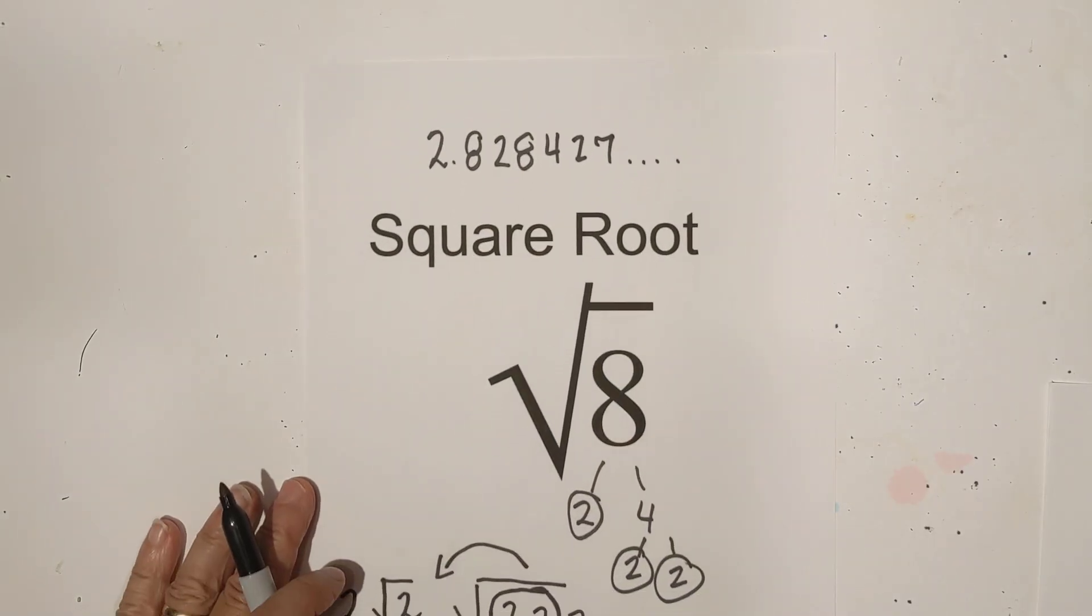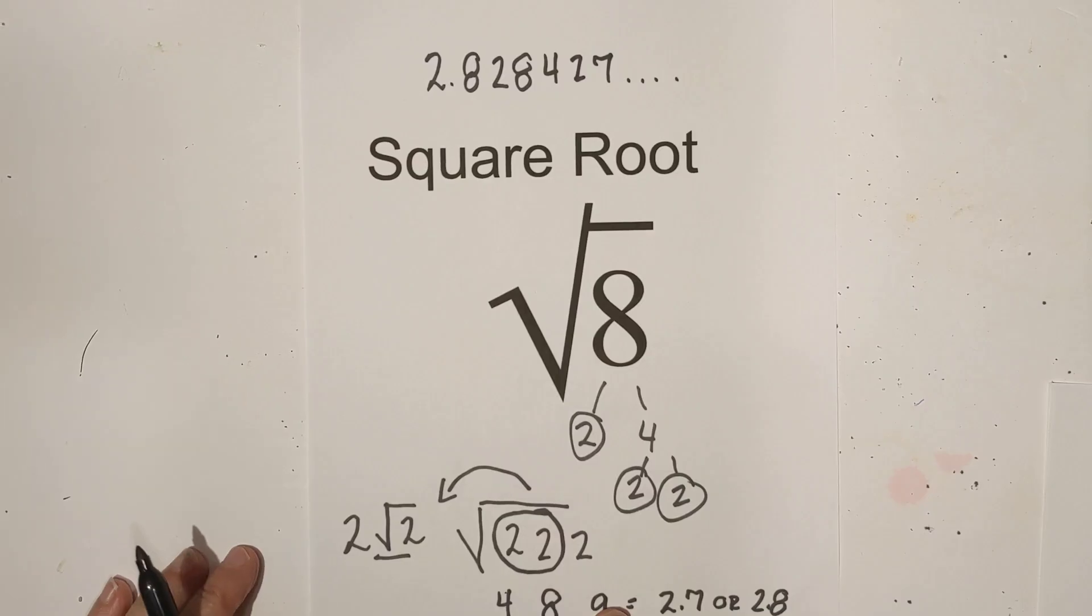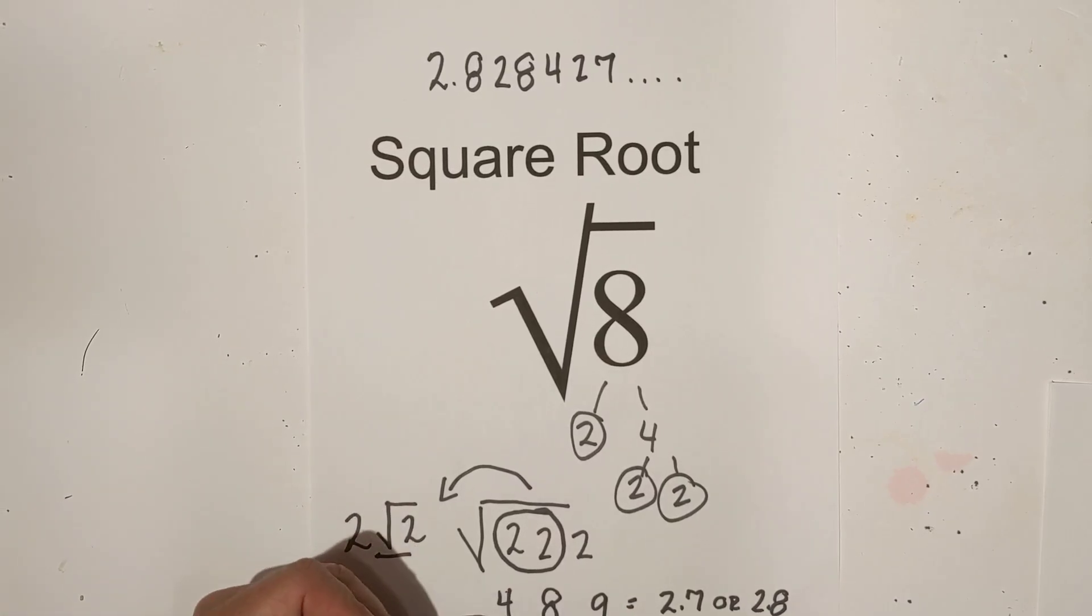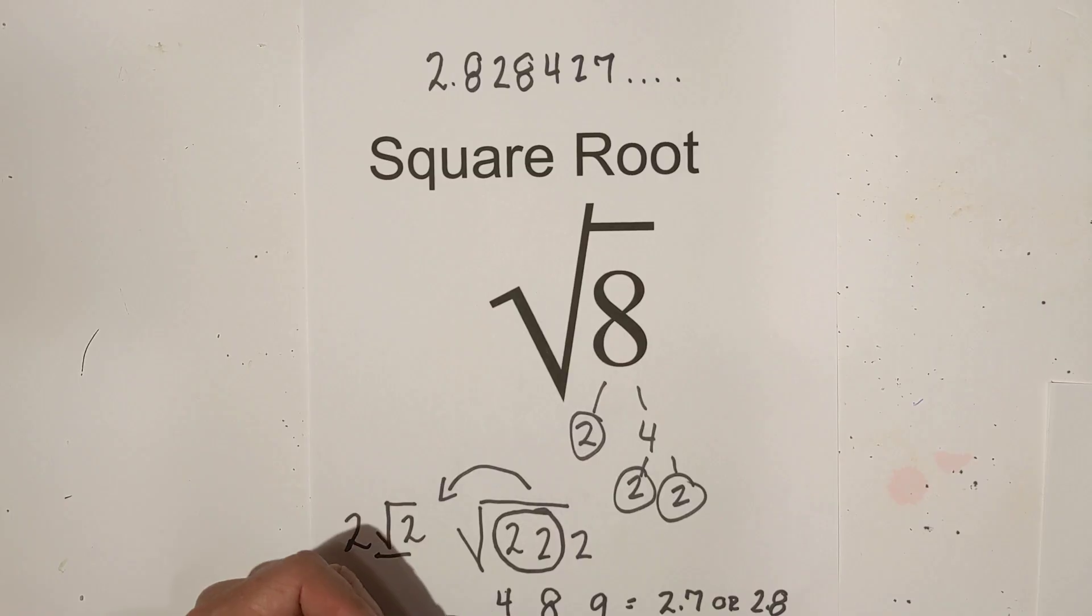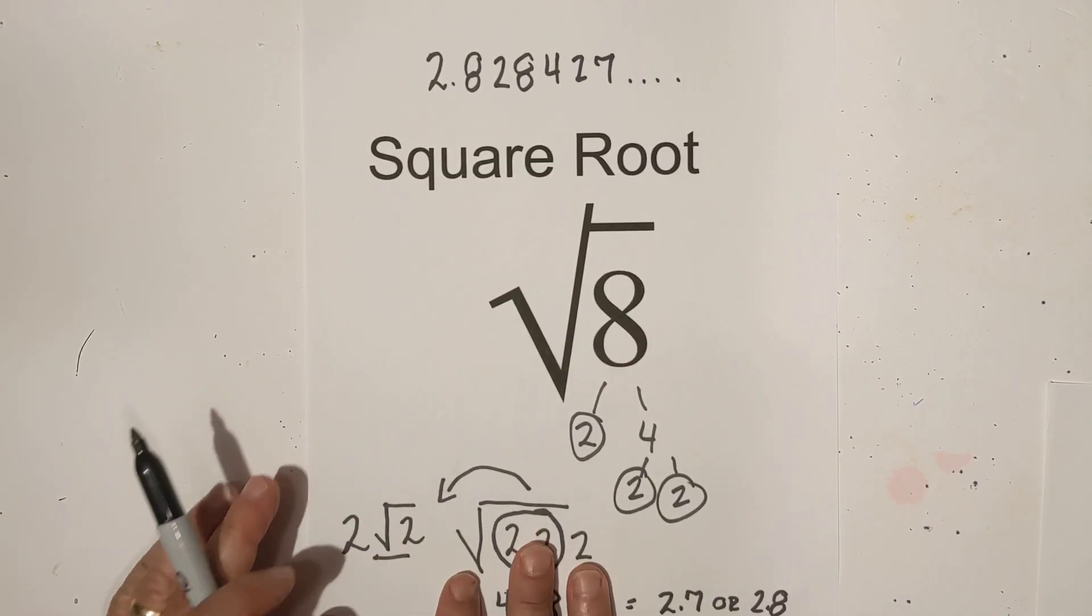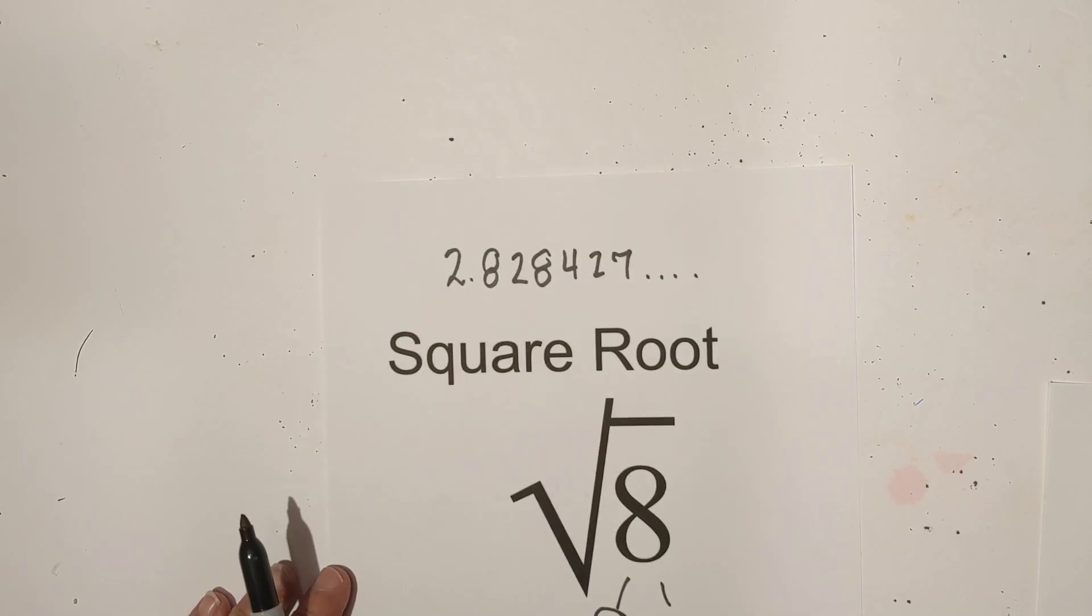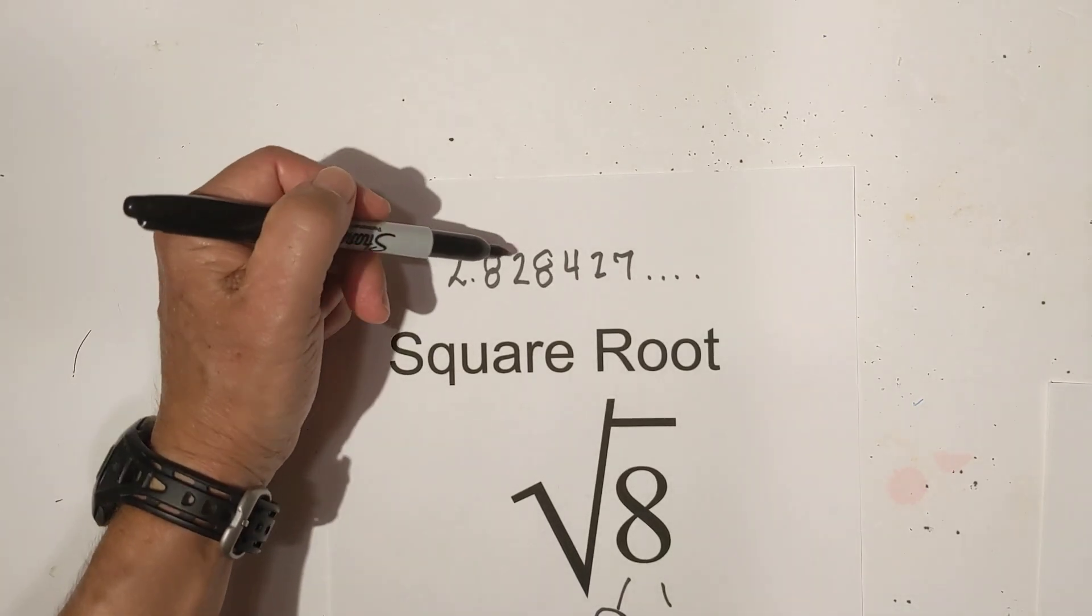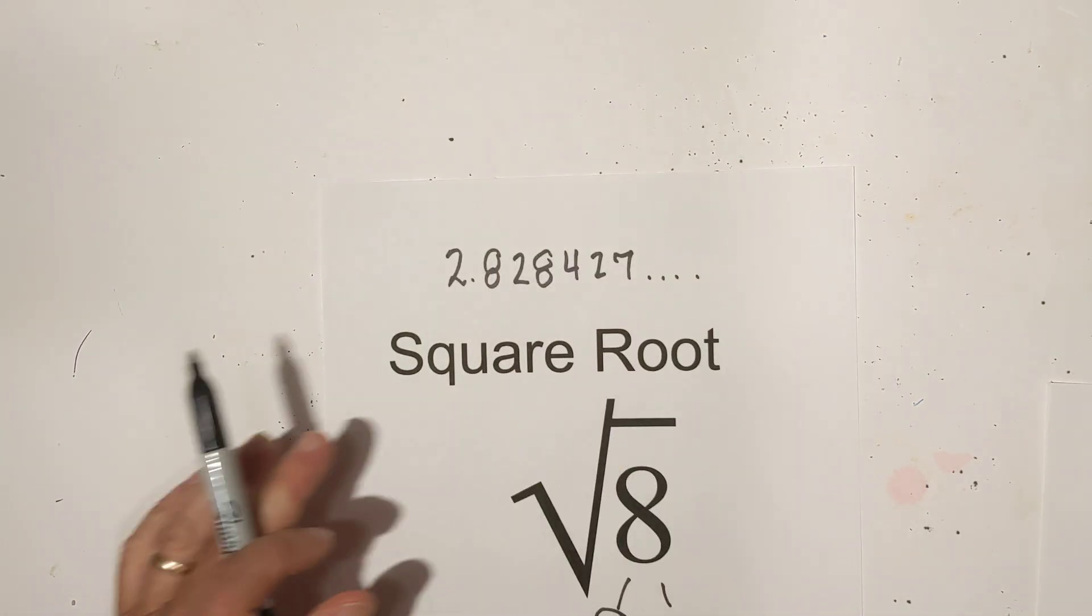So let me summarize real fast. Simplified, it is 2√2. Estimating, because you have 4 and 9 on both sides, 2 and 3, so I'm going to estimate 2.7 or 2.8. And then the value right here is 2.828427 forever and forever.